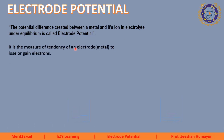Electrode potential is also the measure of tendency of an electrode or metal to lose or gain electrons. This means that kisi bhi metal ya electrode ki tendency ko measure karna — is electrode potential se humein pata chal sakta hai ke kisi bhi metal ki electron ko gain or lose karne ki kitni tendency hai. This is the most important aspect of this topic.